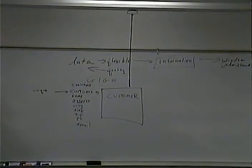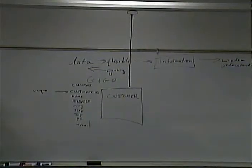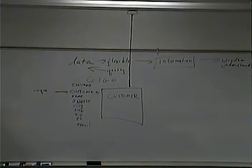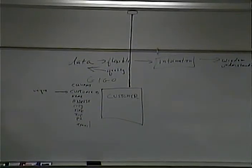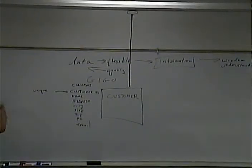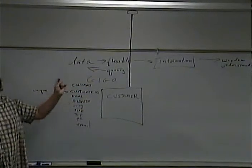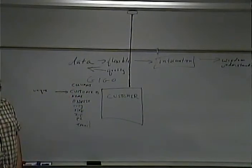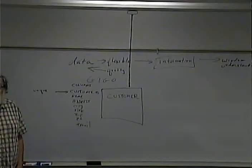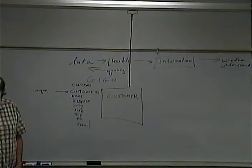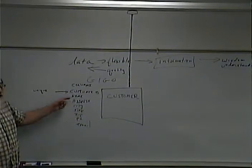Why is it important that there's only one customer with a certain customer ID value? So we don't get them mixed up. If we have a bill for customer number 123, where do we mail it? If there were two customer 123s, who would you mail it to? It needs to be unique because we're going to use this to relate every other table to the customer table — anything connected to a customer is going to be linked only by the customer ID. The name wouldn't work because there could be two John Smiths.